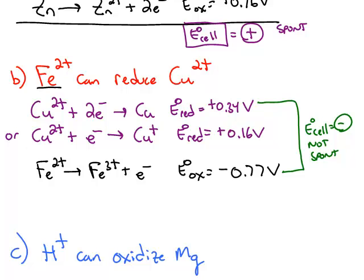We have to take into account the other possibility, which would be the other reduction. If we pair up positive 0.16 and negative 0.77, it's still a negative cell voltage. So both possibilities give us an answer that's non-spontaneous. So this is a false statement. Iron 2+ cannot reduce copper 2+.